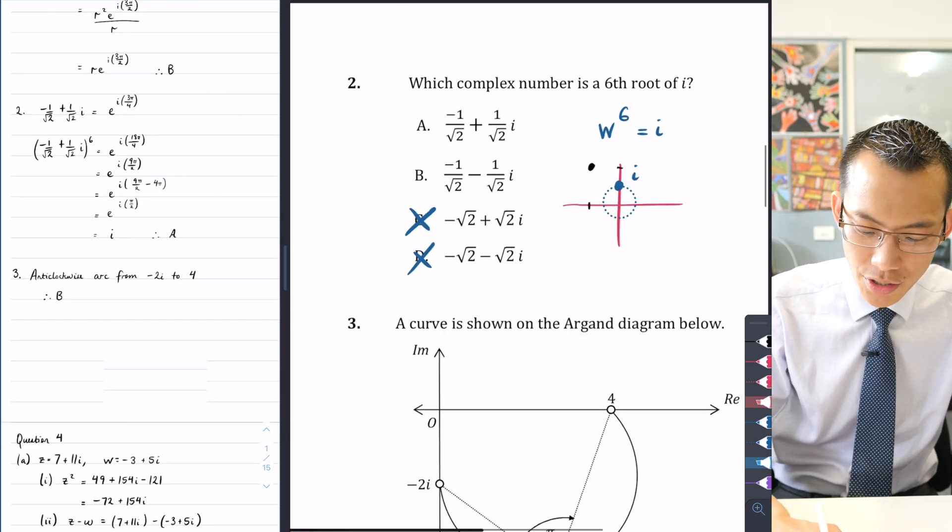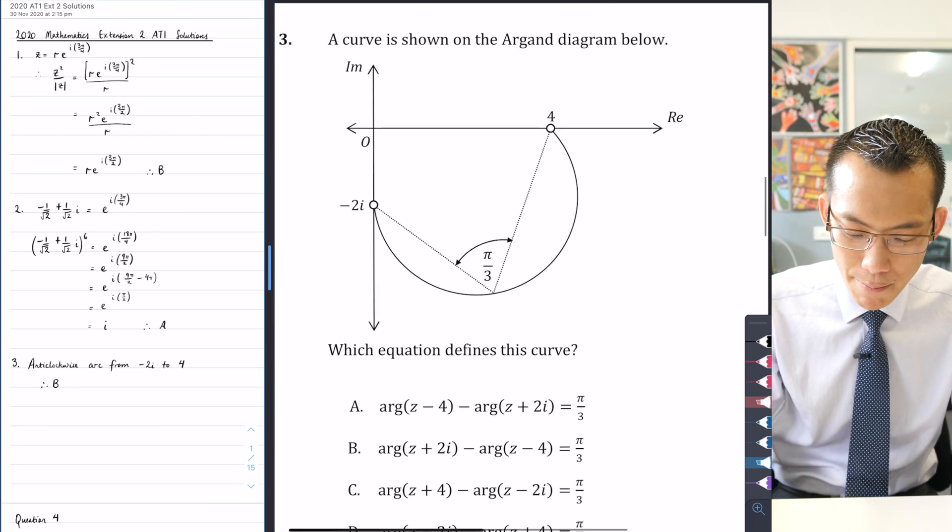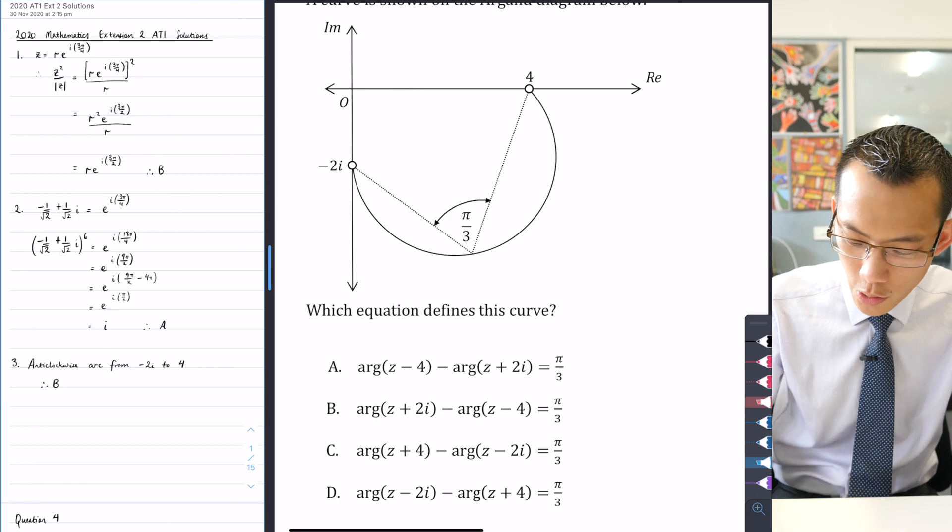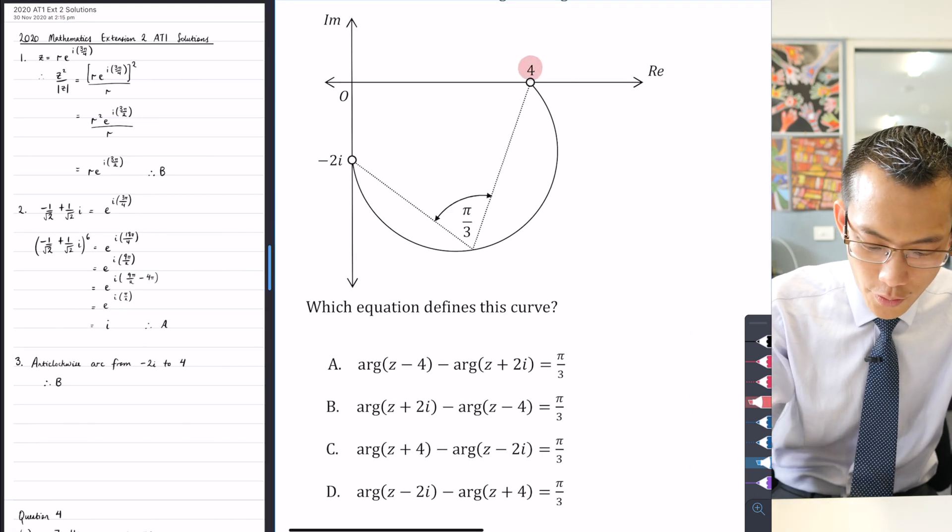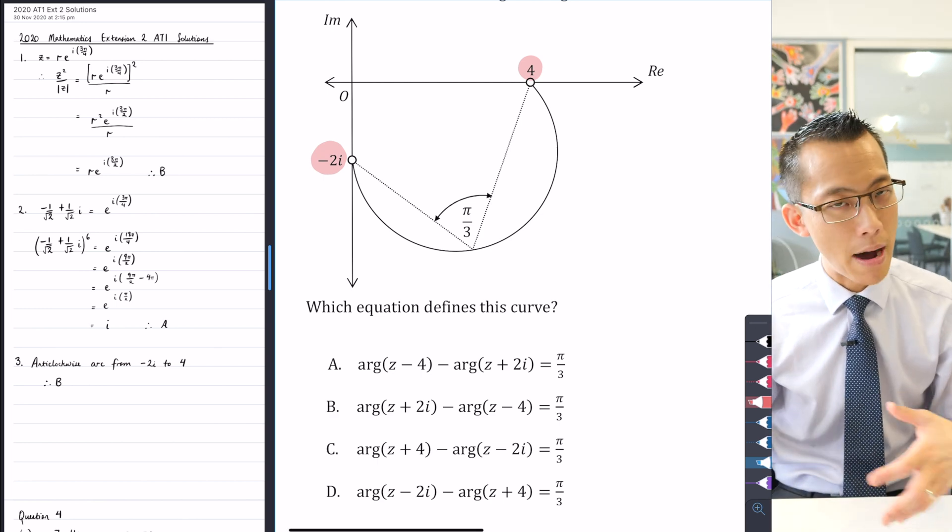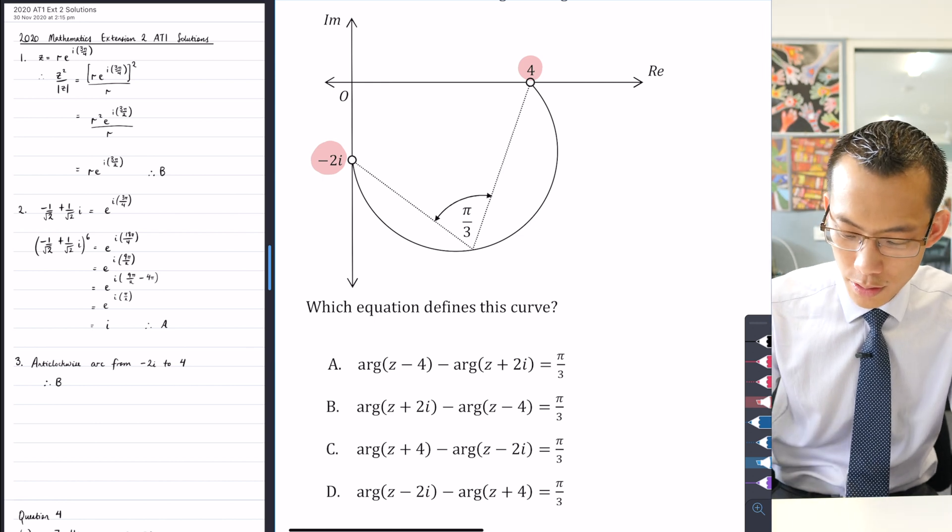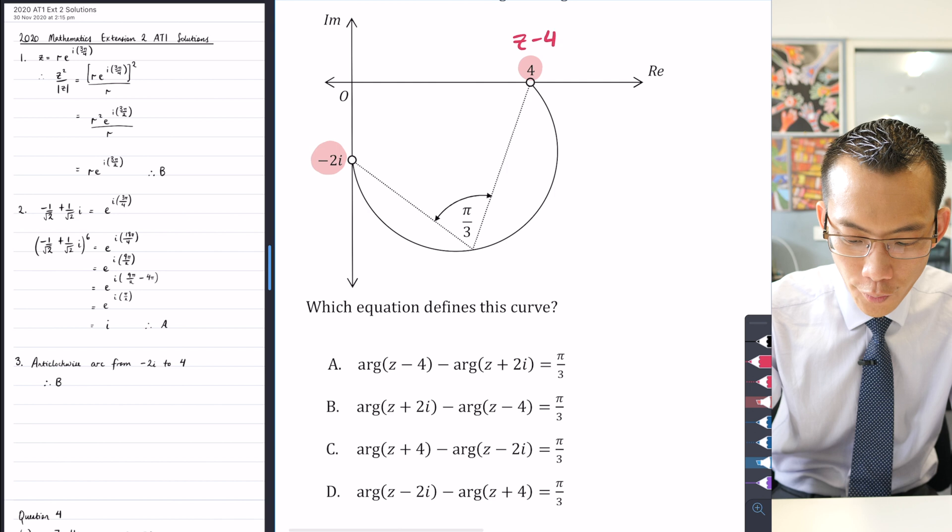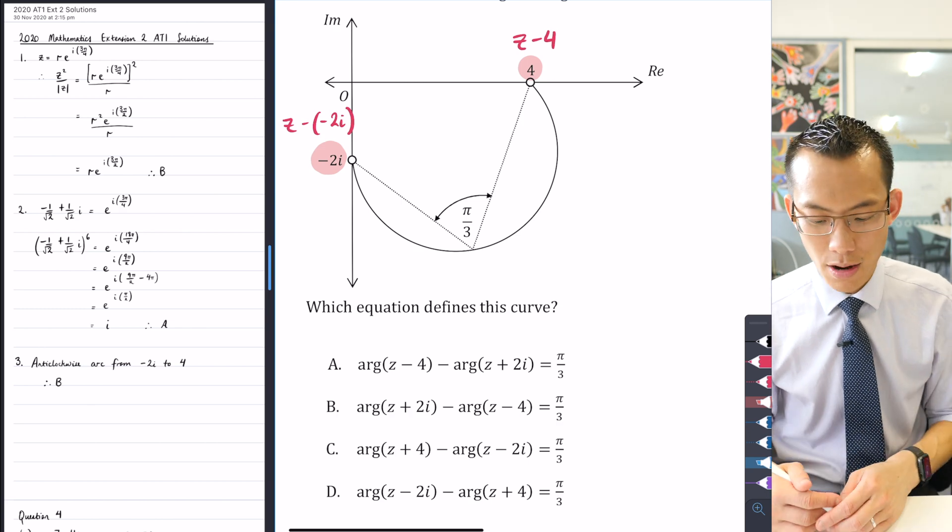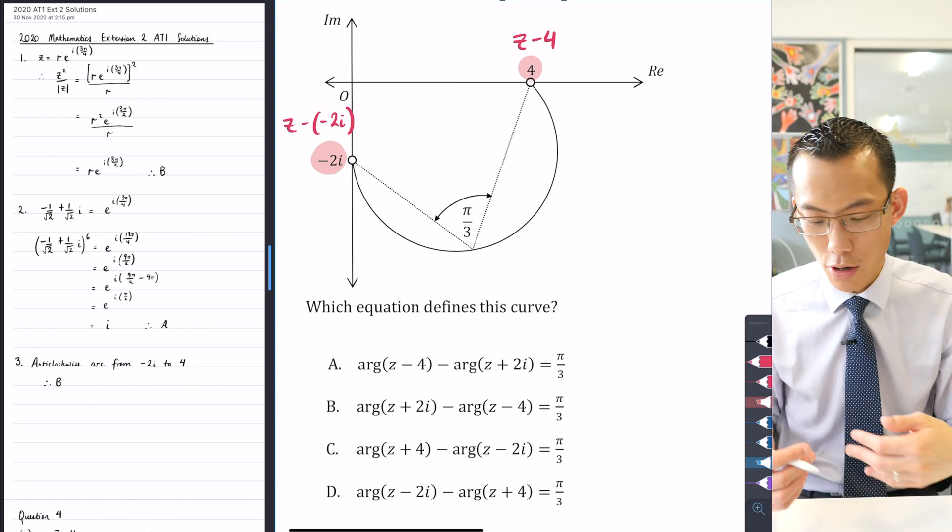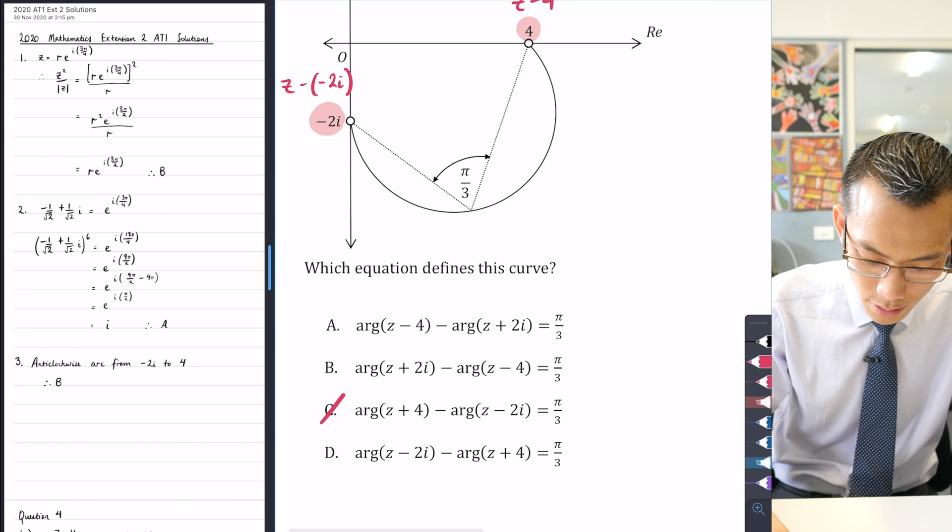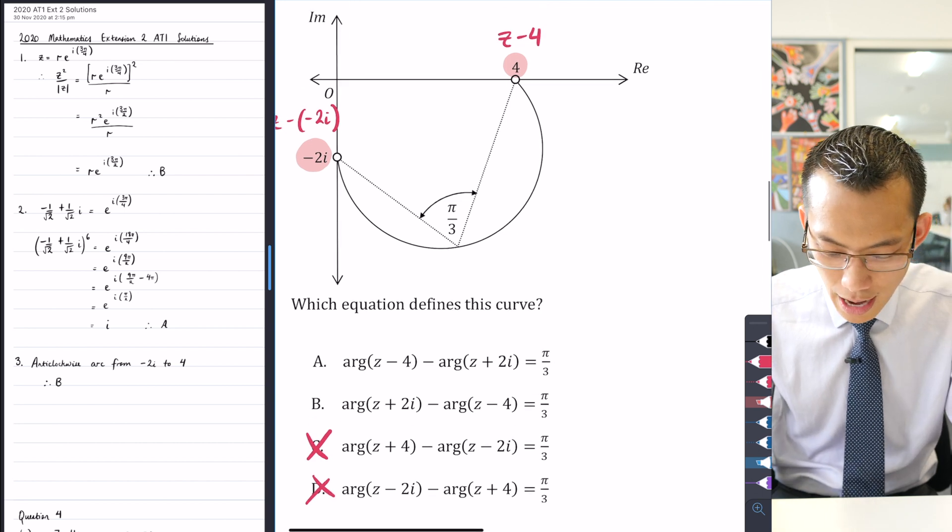And then here comes the last multiple choice question. Here's this curve on the Argand diagram below. Which equation defines this curve? Well, we know it's going to be between this point over here, 4, and this point over here, -2i. So remembering the form of all different minor and major arcs, we need something that's of the form, stay on red I guess, z - 4, and also this is z - (-2i), so that would be z + 2i.